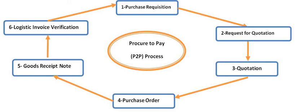After the completion of MIRO, the company proceeds to vendor payment. The company makes payments to all its vendors with respect to the supply of materials and services. The company has its own choices and methods to make payment — for example, by check or by electronic money transfer. Precisely, the logistic invoice verification is the last step of the P2P cycle, but vendor payment is done after this stage.